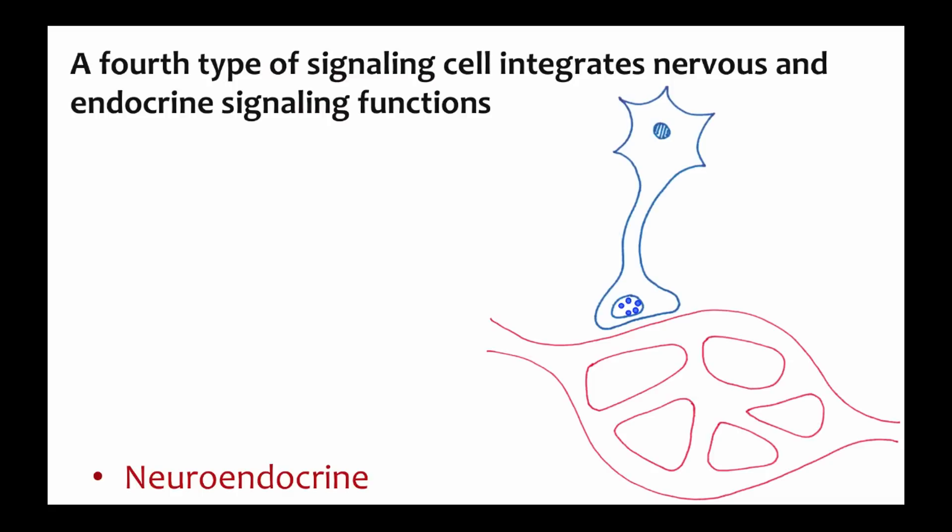Neuroendocrine cell signaling — these cells are a little bit country, a little bit rock and roll. Neuroendocrine cells look and behave a bit like nerve cells in that they generate an action potential. But at the synapse end, instead of releasing a neurotransmitter, they release a hormone into the bloodstream. You will see these cells again in the next video. But right now, let's talk a bit more about our standard hormones and endocrine cells.